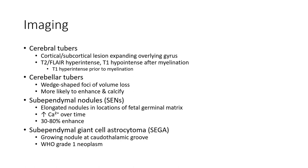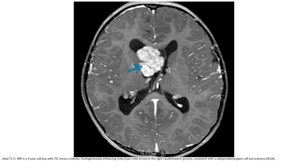Subependymal giant cell astrocytoma: This is a growing nodule at the caudothalamic groove, classified as a WHO grade 1 neoplasm. On T1 contrast-enhanced MRI in a 4-year-old boy with tuberous sclerosis, there is a lobulated homogenously enhancing mass in the right caudothalamic groove, consistent with a subependymal giant cell astrocytoma.